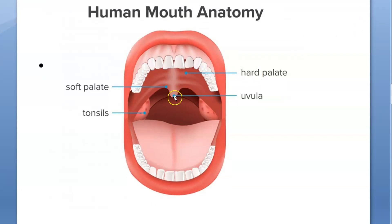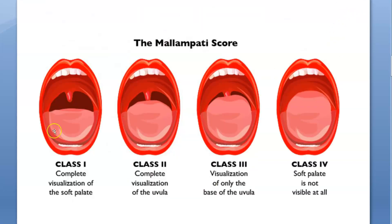This hanging structure is the uvula — it hangs down like a U shape. In grade 1, you are able to see the hard palate, the soft palate, and the uvula completely. In grade 2, the uvula is fully visible. In grade 3, only the base of the uvula is visible. And finally in grade 4, the uvula is not visible at all.